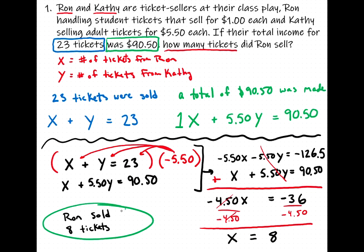If the problem also asked how many tickets Kathy sold, that's easy now: Ron sold 8 out of the 23 total tickets, so Kathy sold the other 15. That does it for this problem. The approach is always the same: first step, identify the unknowns and give each a symbol. Then use the information in the problem to set up two equations for two variables. Once you've done that, you've taken the words out of the word problem and it becomes a system of equations problem.